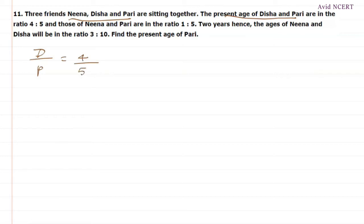And those of Neena and Pari, so which is Neena by Pari are in the ratio 1 by 5. And two years hence, the ages of Neena and Disha, which means hence means plus. So, Neena plus 2 divided by Disha plus 2 will be 3 by 10.